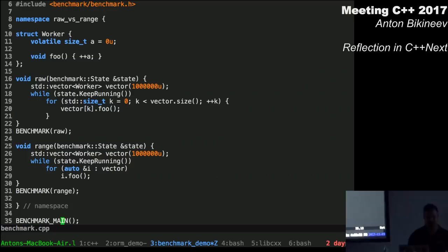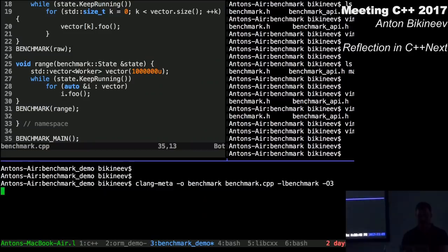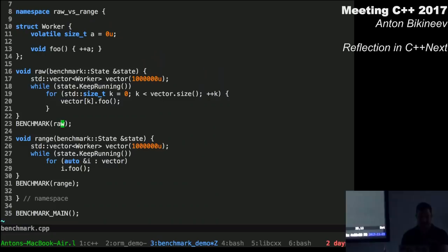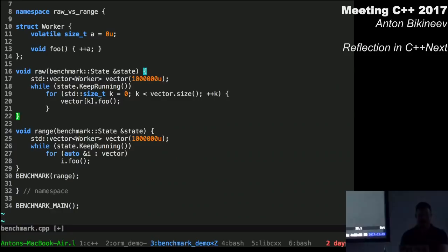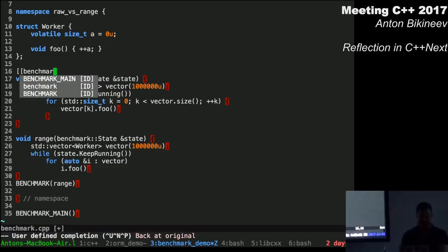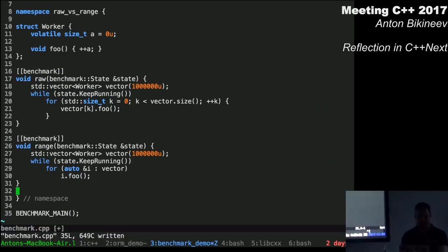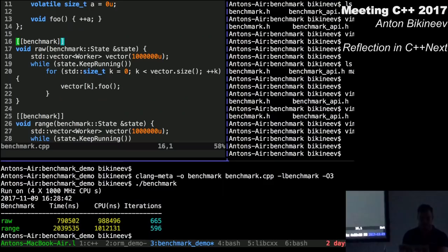Here is what the simple example of benchmarks look like. So here we have two benchmarks, raw for loop and range based for loop. I know this is a silly benchmark. And there are a couple of macros here. You can see it. It is benchmark macro and benchmark main macro. And I'm not a fan of macros. And I want to completely eliminate macros from this example. This is the purpose of this example.